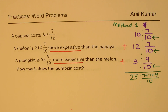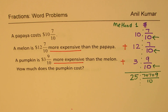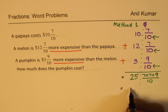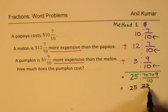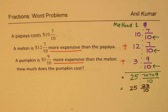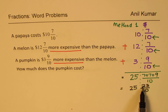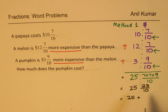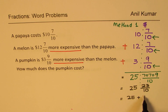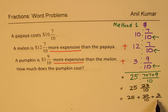So the whole number sum is 25. For the fractions: 7 plus 7 is 14, plus 9 is 23, so we get 23/10. Now 23/10 is an improper fraction. We can write it as 20/10 plus 3/10, and 20/10 equals 2, so this gives us 2 and 3/10.